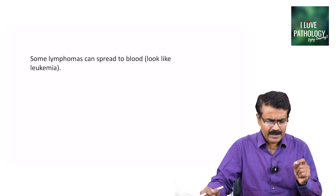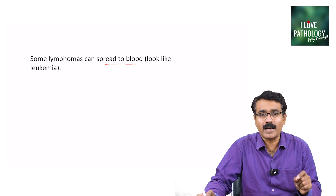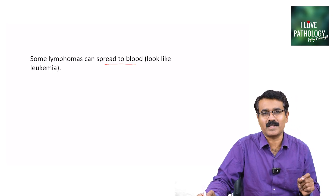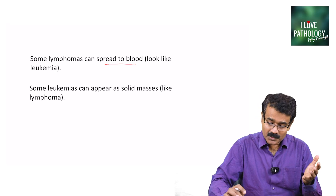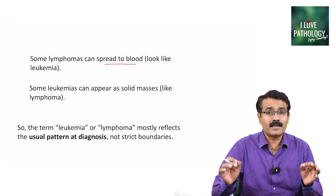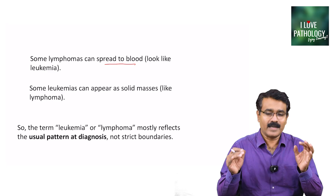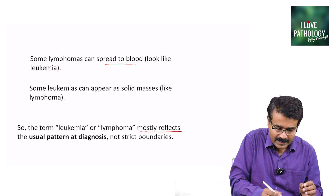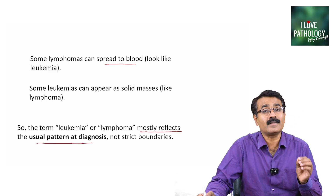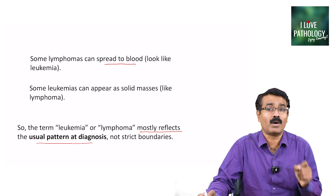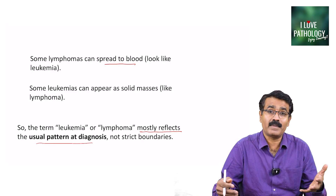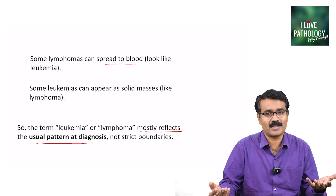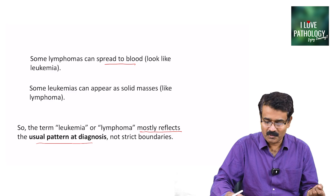Having said that, some of the lymphomas can spread to the blood and they look like leukemias. Also, some leukemias can appear as solid masses. This essentially means the terms leukemia and lymphoma mostly reflect the usual pattern at diagnosis and they are not strict boundaries — some lymphomas can manifest as leukemias and some leukemias can present as solid masses.